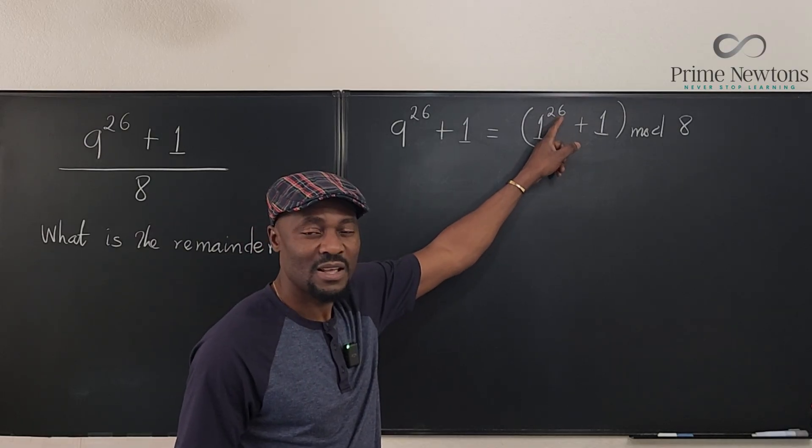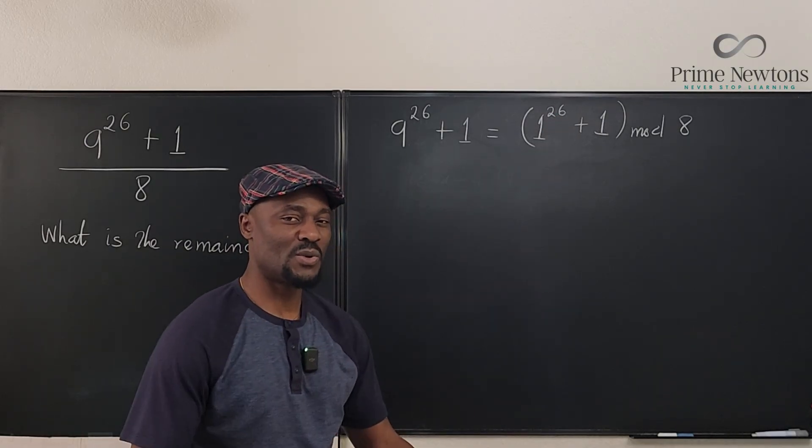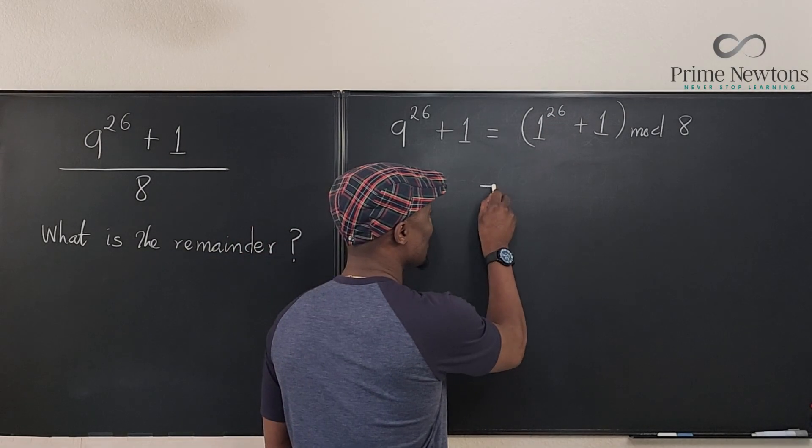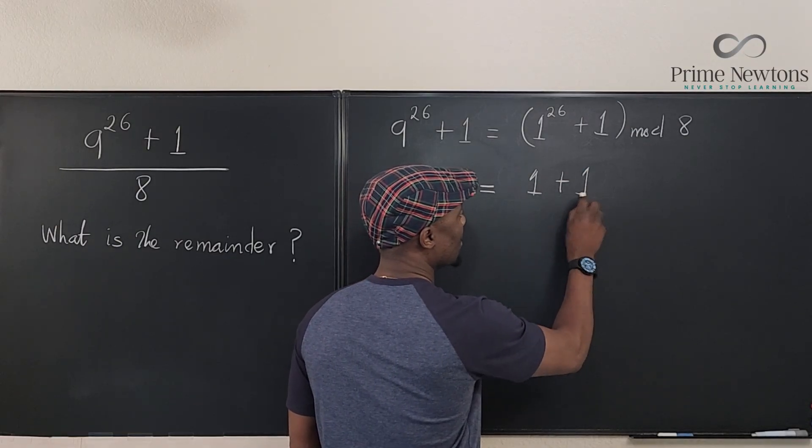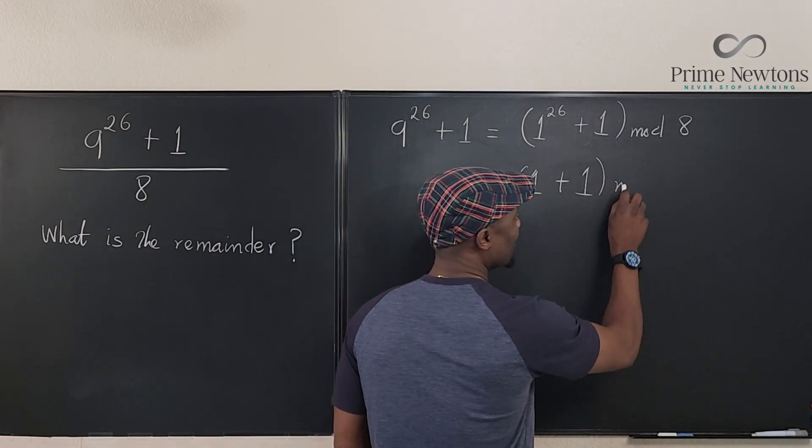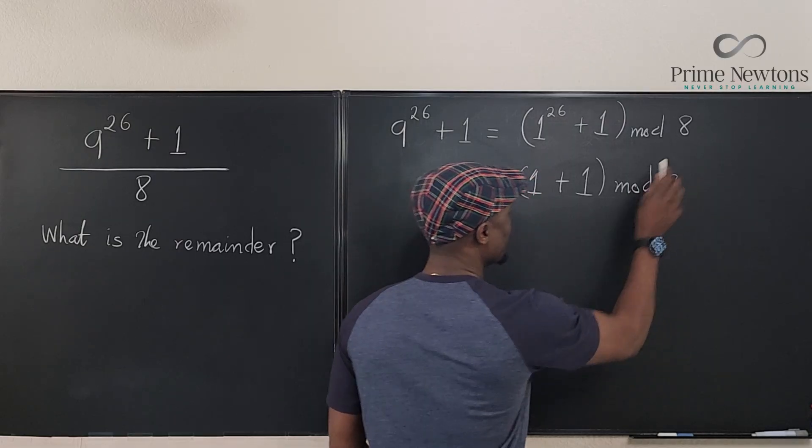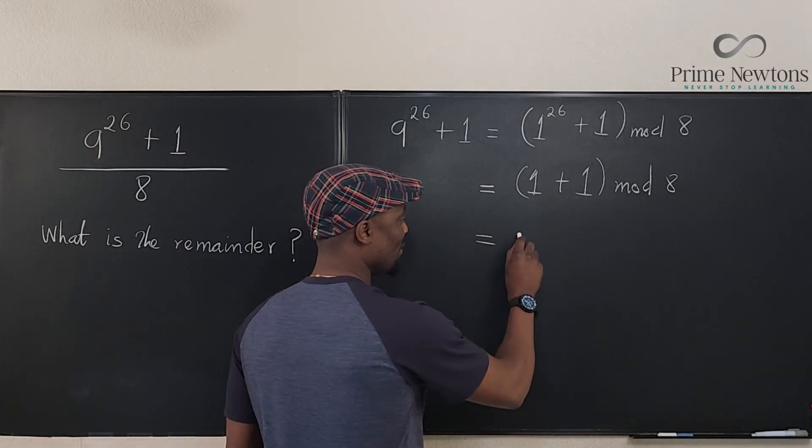So right now 1 to the 26, what happens? What is 1 raised to power 26? It's just 1. So this is the same thing as 1 plus 1 mod 8. What is 1 plus 1? 2.